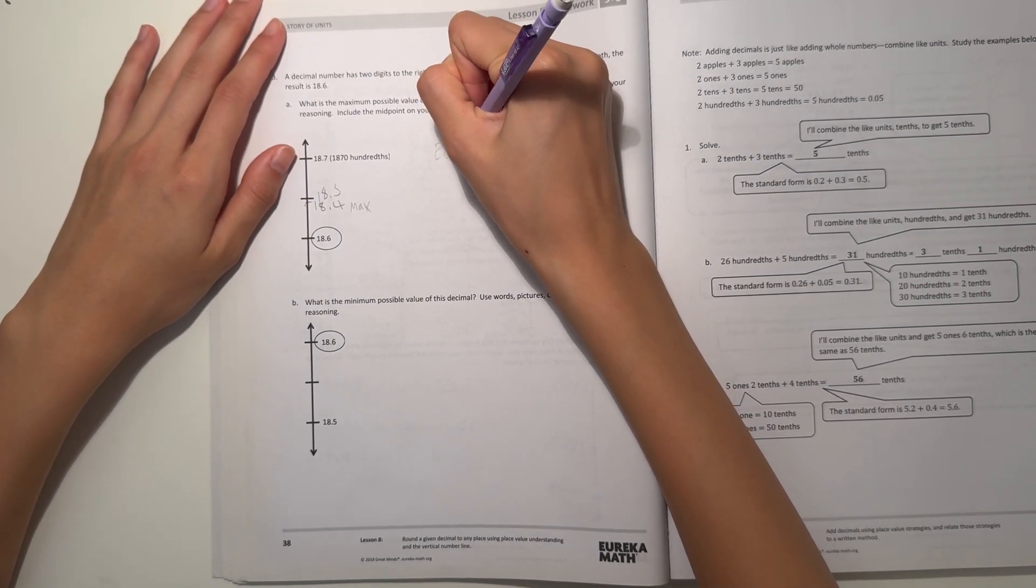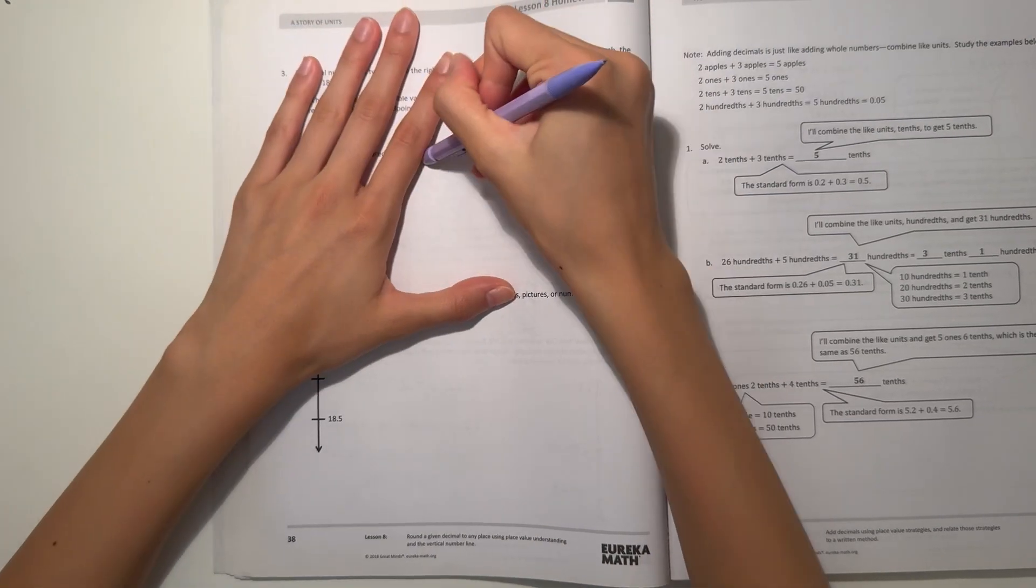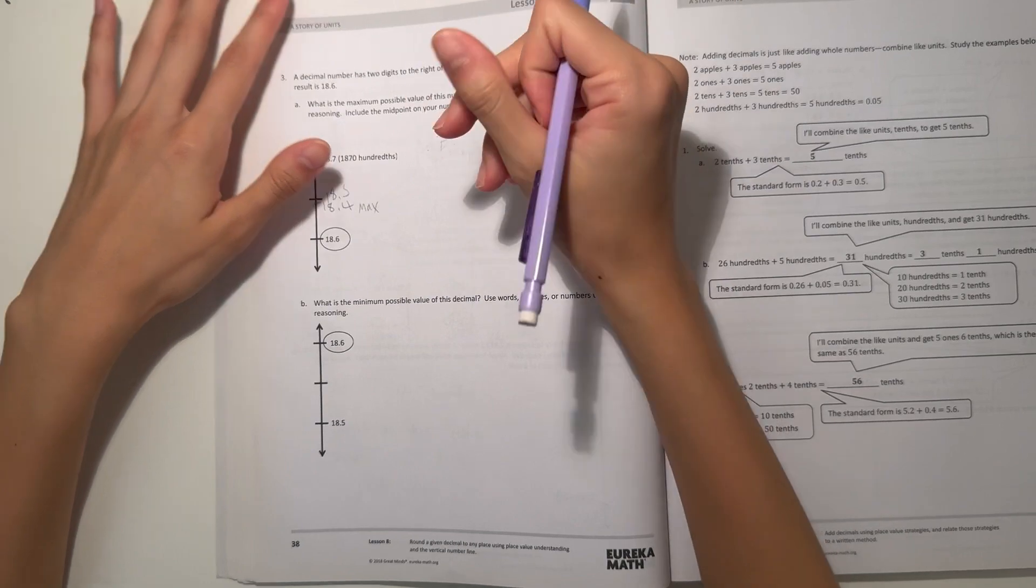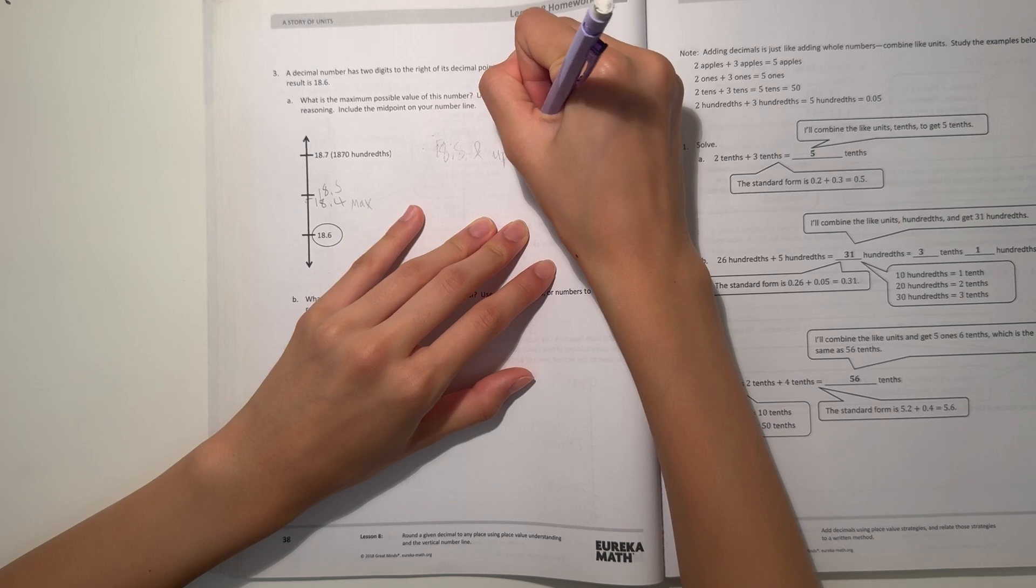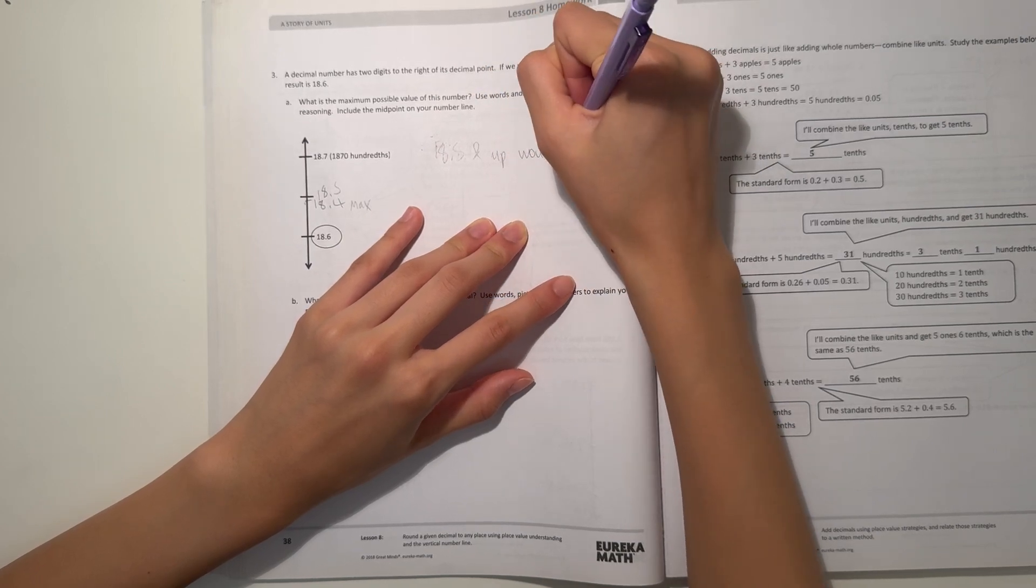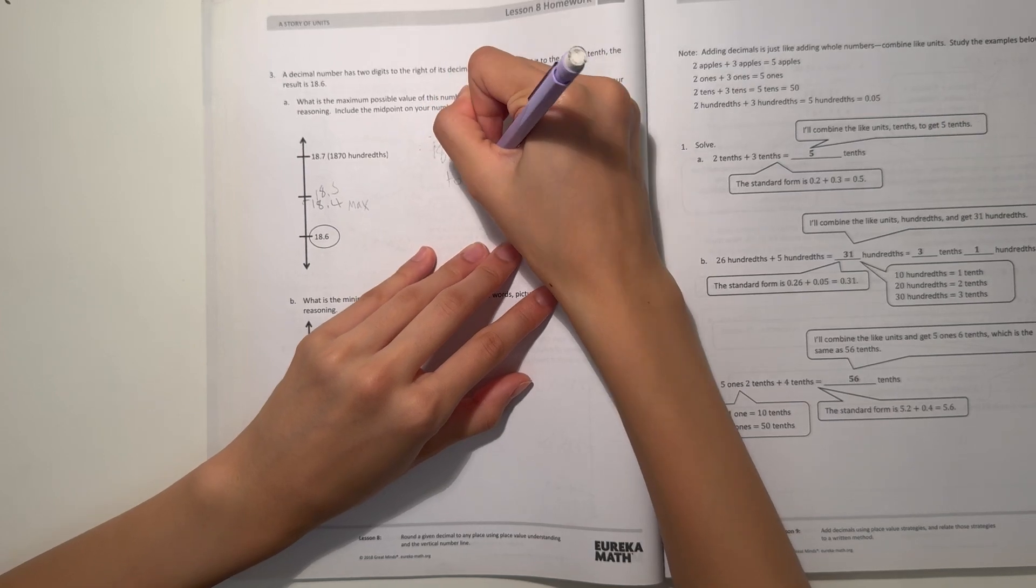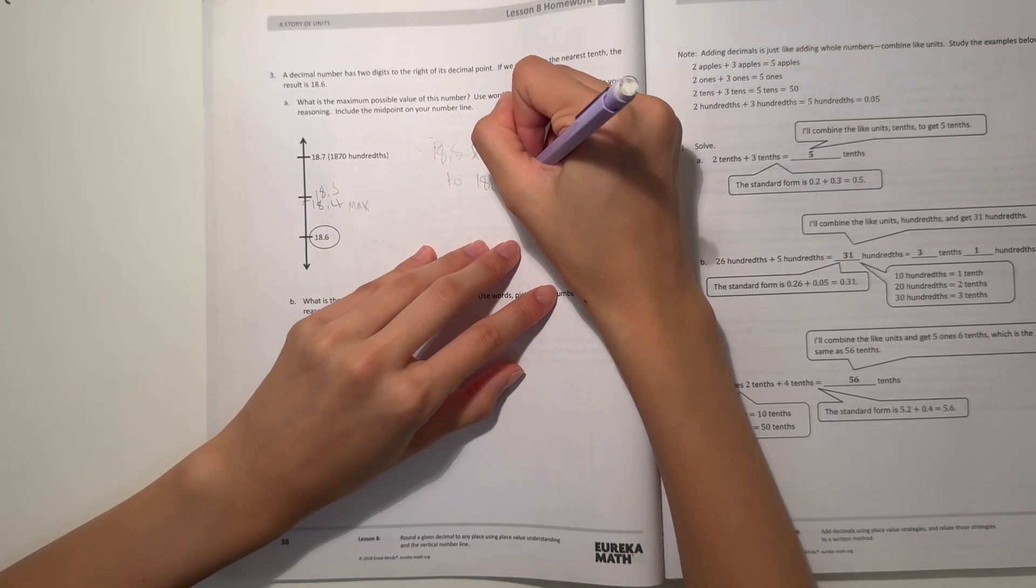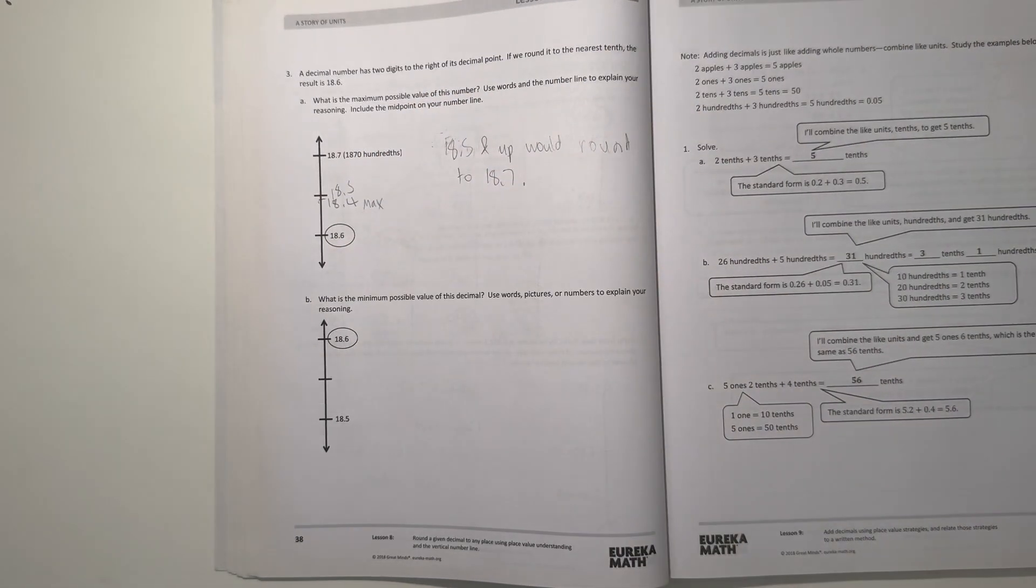So that would be 18.64, the maximum number. If we want to explain your thinking, we can write... So 18.65 and up would round to 18.7, so then that means the number right below it would round down.